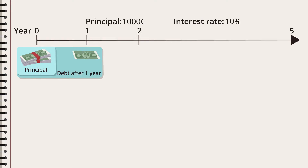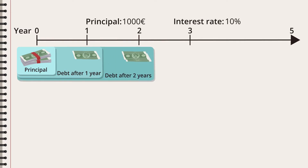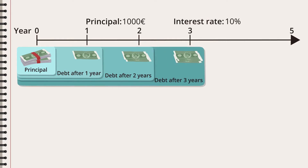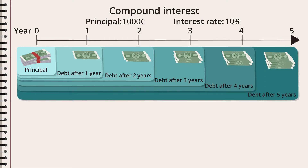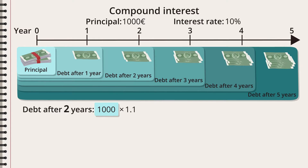After two years, the bank calculates the new interest on the sum of the principal and the first year's interest. Year three — same thing: the bank calculates the new interest on the total debt, including interest from the previous years. Each year, new interest is added to the debt and the debt increases. Since the debt increases, the interest amount increases too. After one year, Michael owes the principal times 1.1, and after two years he owes that amount again multiplied by 1.1. Use your calculator to see how much the debt is after two years.